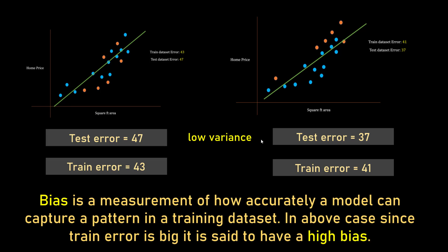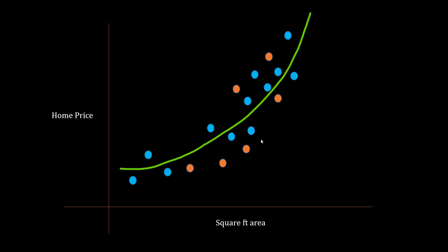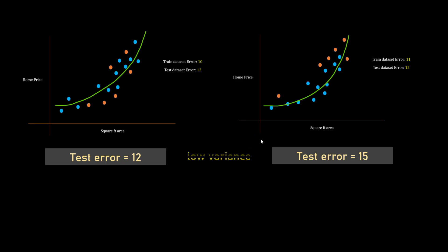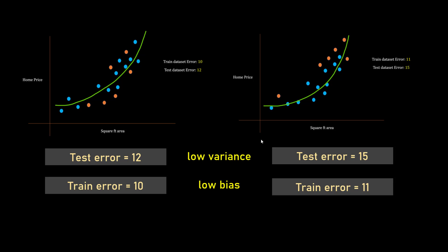Now let's look at the ideal scenario where you come up with a model that accurately describes the pattern available in your training data set. Here your training error and test error both are low. Even if you select different set of training data points - see the training data points here are different - but still your model selection is such that your train and test error both are kind of low. In this case it's called low variance, low bias model.